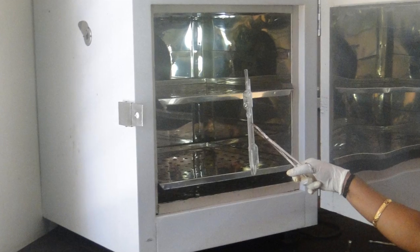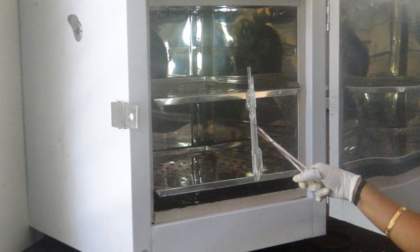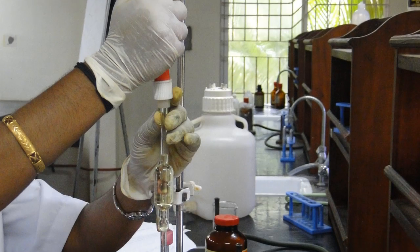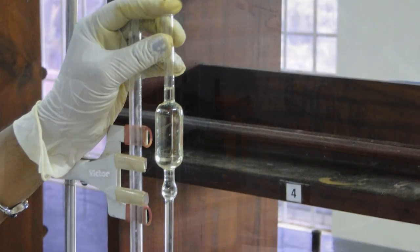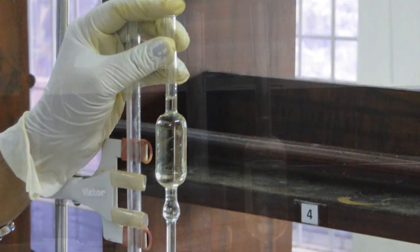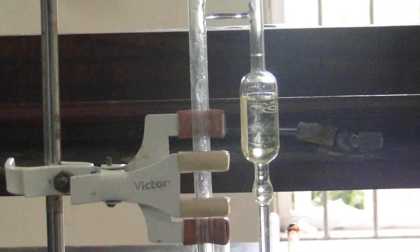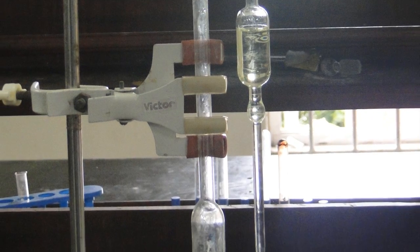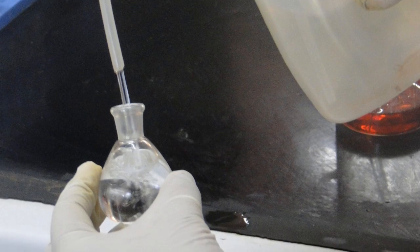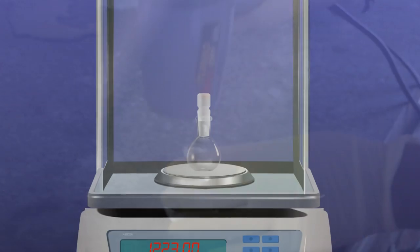Now remove the water from viscometer and dry it. Introduce in bulb B the same volume of liquid and measure the time of flow of liquid as before. Take at least three or four readings and then take the mean value. Now wash and dry the pycnometer or RD bottle and then weigh it empty.